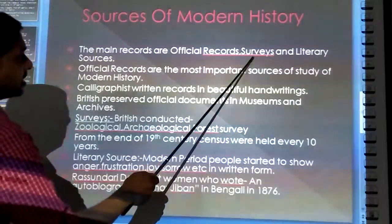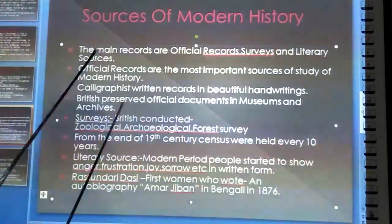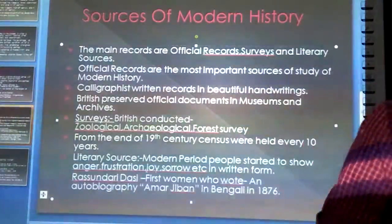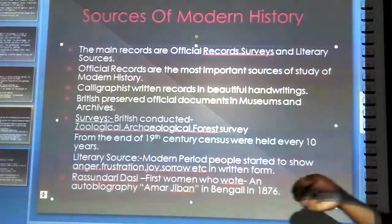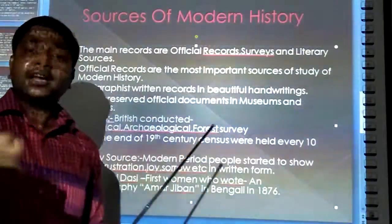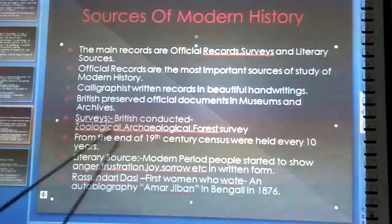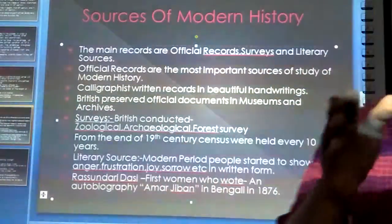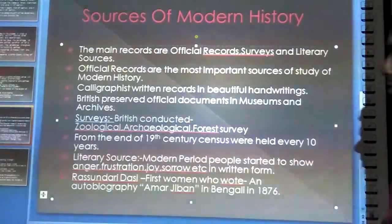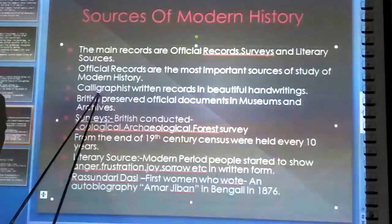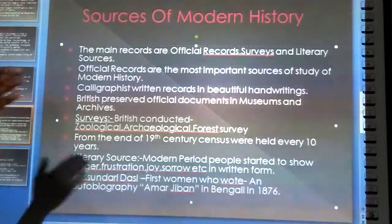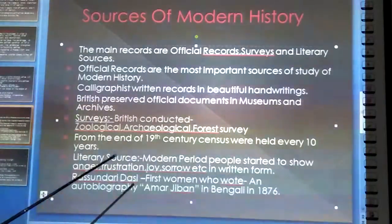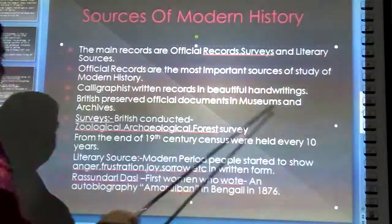The first source is official records. The British tried their best to maintain the record of every document in a better and advanced way. They used calligraphists — persons who write in a beautiful handwriting — to get the records in written form. British also preserved official documents in museums and archives. You can find one of the archives established by the British in the year 1920, and one of the finest examples of a museum is the Victoria Museum.